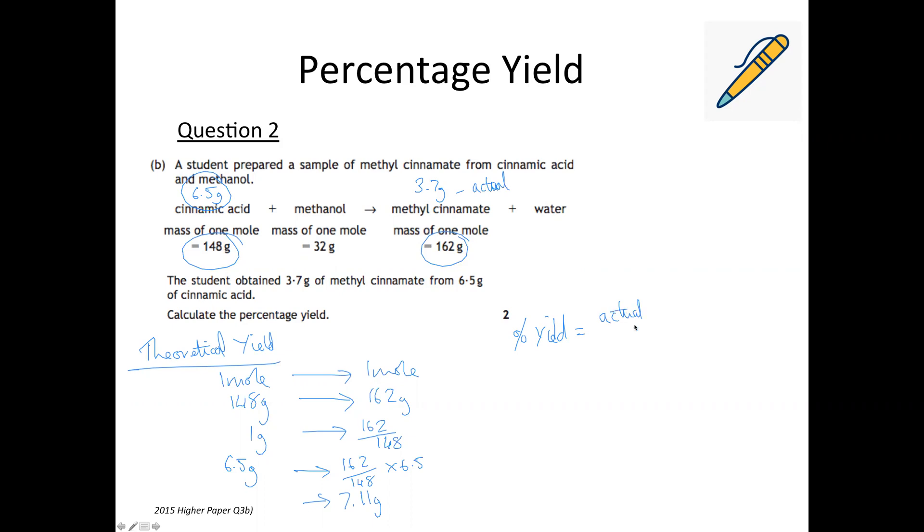So actual over theoretical times 100. So the actual was 3.7 grams, the theoretical we worked out is 7.11 grams and times that by 100 converts it into a percentage. So that comes out as 52.04% to two decimal places. So that's the two examples calculating the percentage yield.